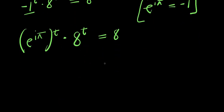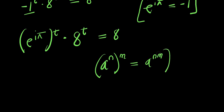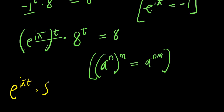Now applying the rule that if you have a power n, raised to the power m, that equals a power n times m — multiplying the exponents — I get e power i times pi times t, times 8 power t equals 8.